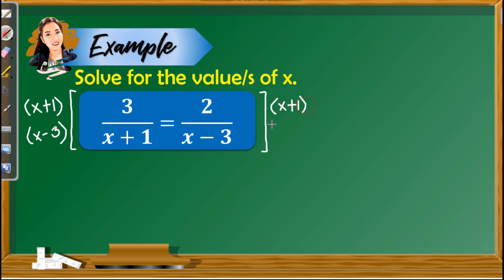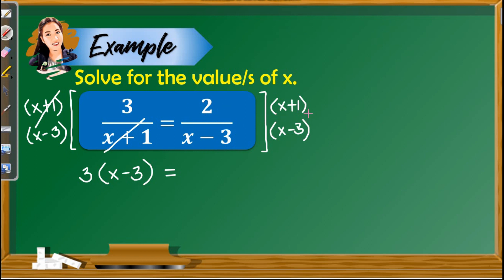We have to write again x plus 1 and x minus 3, and multiply both sides. So x plus 1 and x minus 3 multiplied by the first term will cancel out x plus 1. So we only have 3 and x minus 3, meaning we multiply them. On the right side, multiplying the LCD to that term will cancel out x minus 3. So what's left are 2 and x plus 1. Now that we have removed the denominators, all we have to do is simplify this equation.